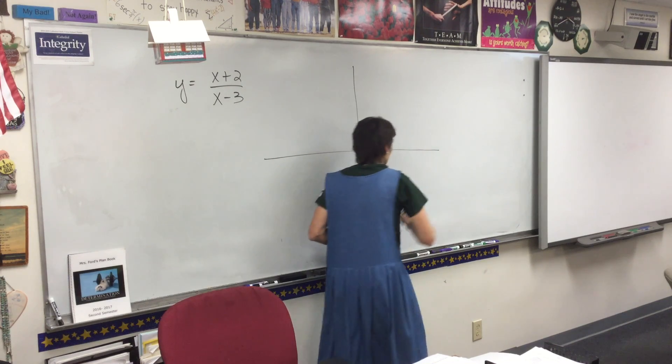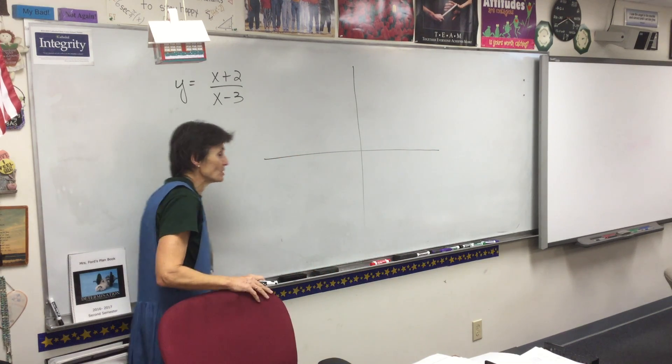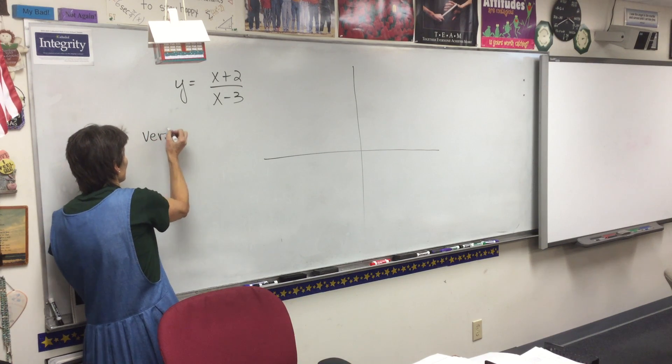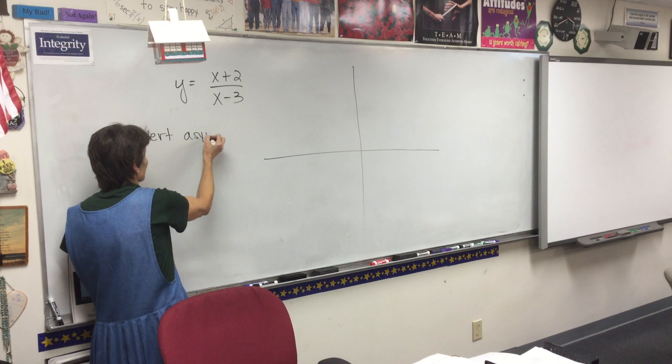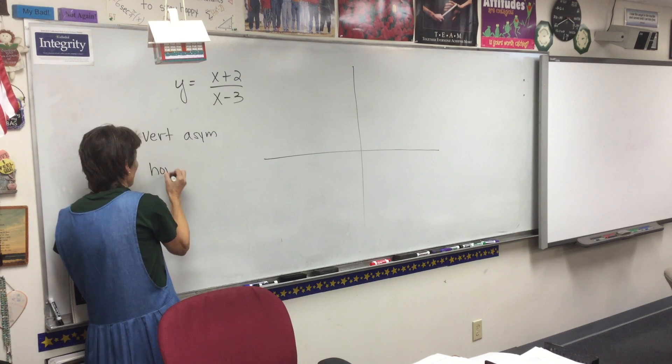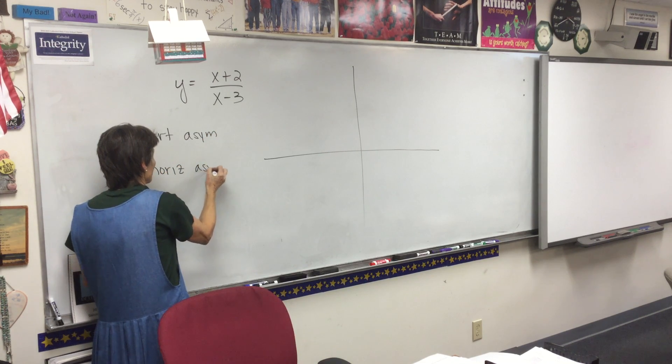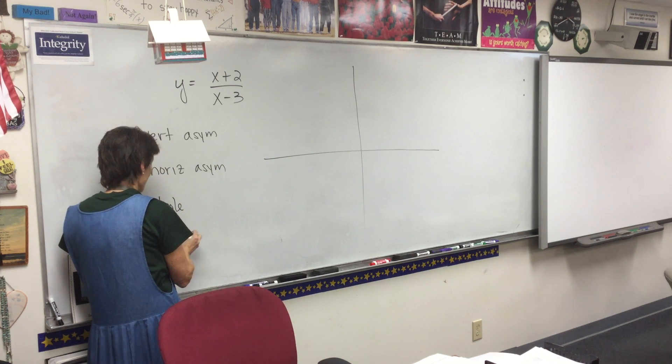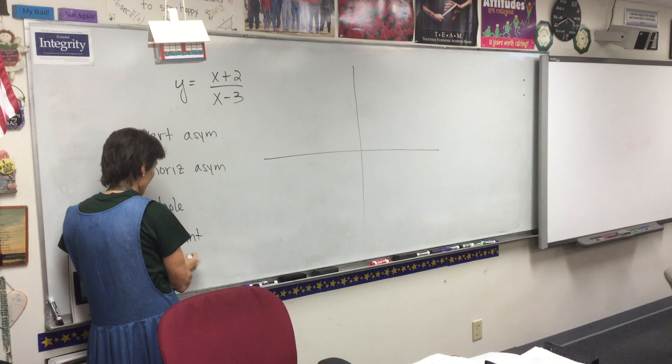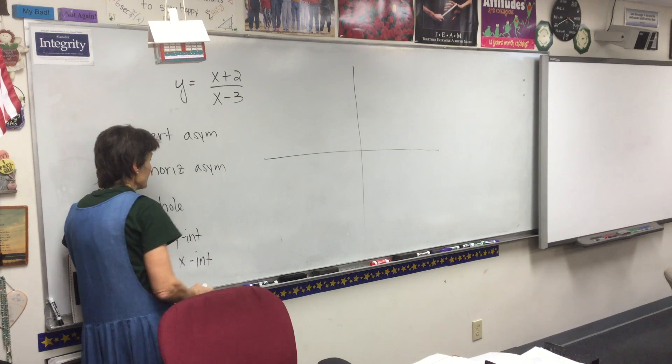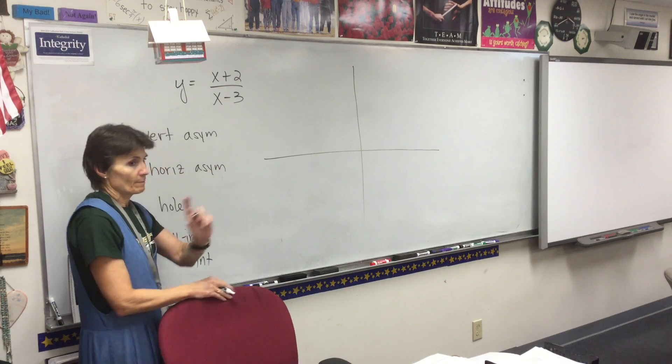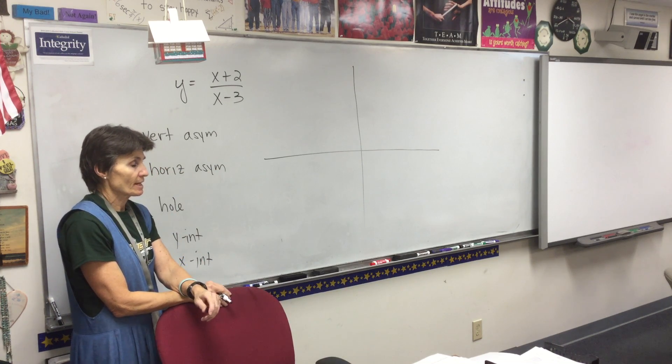So we're going to sketch this thing, and the information that we're going to include are the vertical asymptotes, the horizontal asymptotes, the holes, the y-intercept, and the x-intercept. If we can figure all of those things out, we ought to be able to sketch this thing.